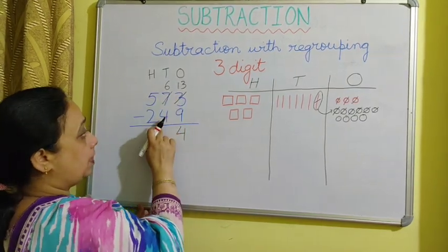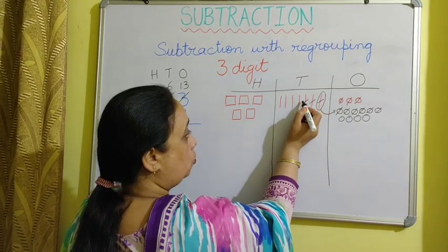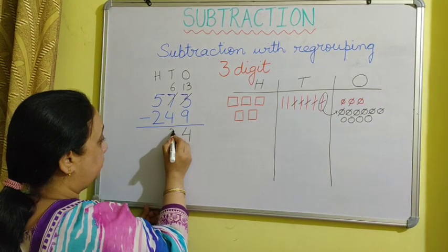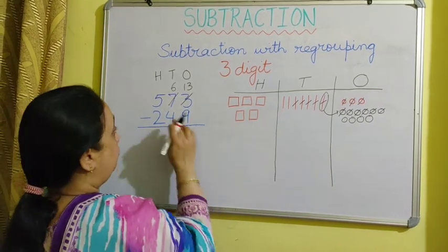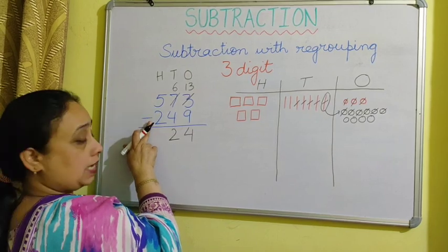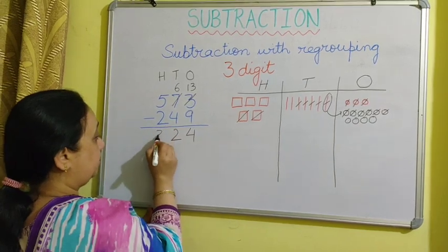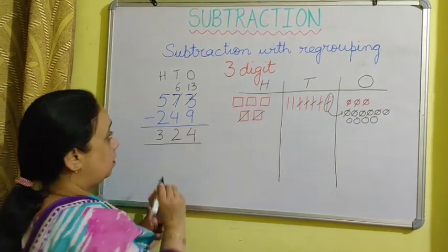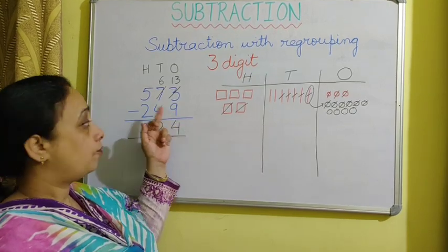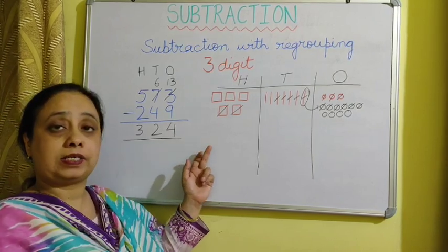Now we take away 4 tens from the remaining 6 tens, leaving 2 tens. From the hundreds column, we take away 2 hundreds from 5 hundreds, leaving 3 hundreds. So when we subtract 249 from 573, the difference is 324.